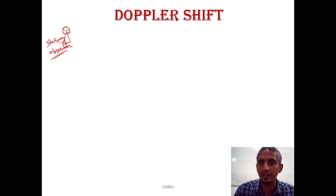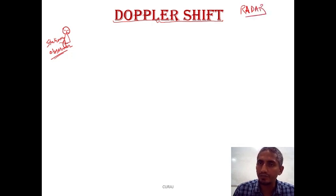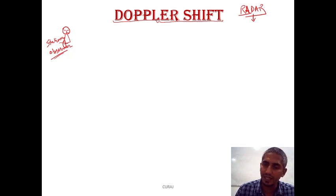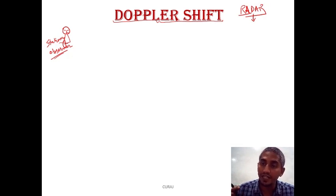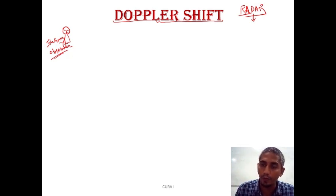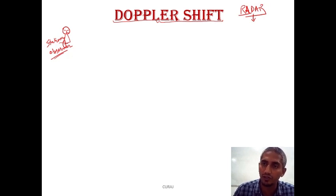The Doppler shift is a very important term in radar. Radar is an acronym — Radio Detection And Ranging — meaning in radar technology an object can be detected and its distance can be calculated. Not only can the object be detected and the distance calculated, but information about its movement — that means an object's speed — can also be found out using the technique of Doppler shift.